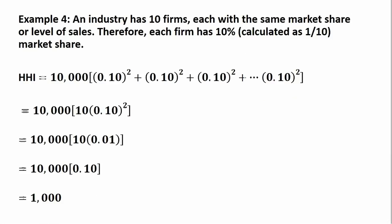And just one more example, Example 4: an industry here with 10 firms, each of equal size, same market share. The Herfindahl-Hirschman Index in this example would be 1,000. All right, I hope you found this video helpful.